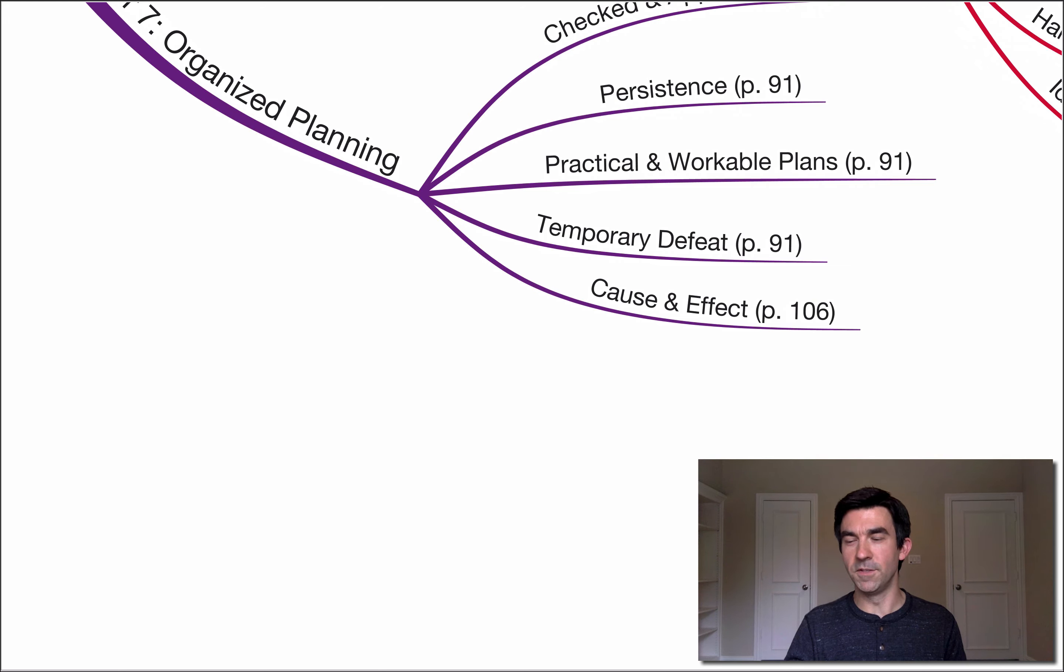So this principle of cause and effect is so powerful. It reminds me of James Allen in his great book, As a Man Thinketh. We are what we are and what we are because of our own conduct. So every thought we have, every choice we make, every action we take produces its own like kind effect.